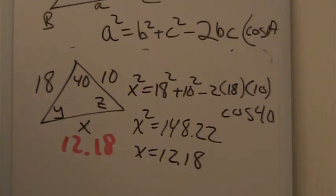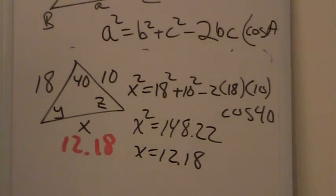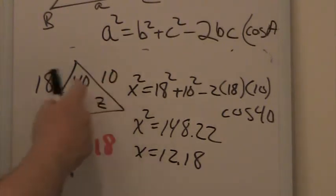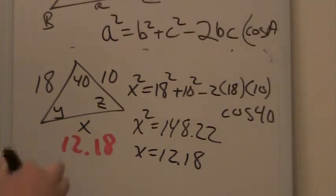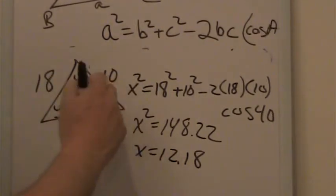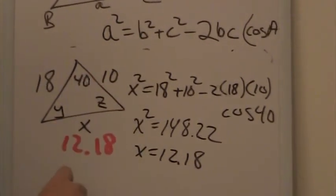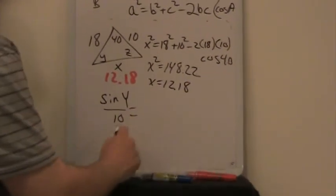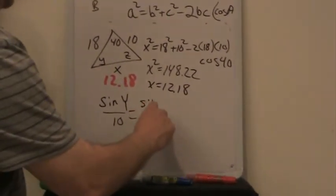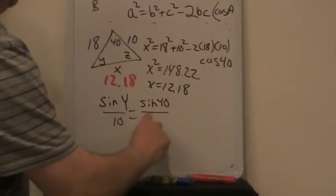Now here's a hint. When we use law of sines, you always want to go for the smallest angle first. So this is side 10, this is side 18. I'm going to go for y. There's a reason behind this which I'll explain in class, but it's based upon co-functions. Take the angle opposite the smallest side. So I'd say sine of y over 10 would equal sine 40 over 12.18.